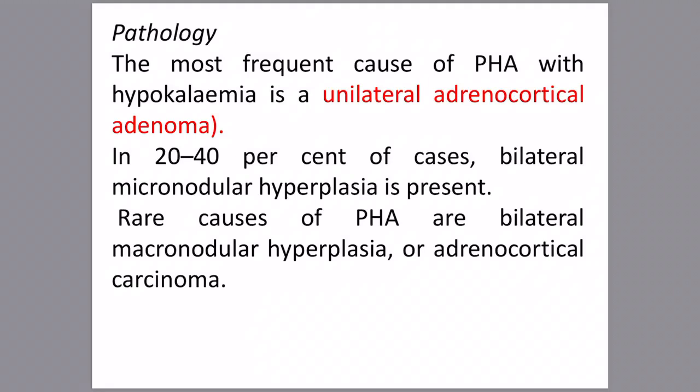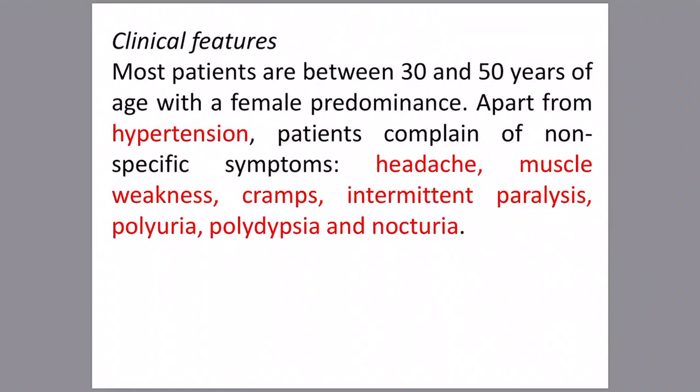Pathologically, the most frequent cause of Conn's syndrome is unilateral adrenocortical adenoma with hypokalemia. In about 20 to 40 percent of cases, bilateral micronodular hyperplasia is present, which is less frequent than unilateral adenoma. Rarely, primary hyperaldosteronism is due to bilateral macronodular hyperplasia or adrenocortical carcinoma.